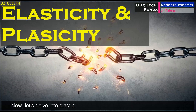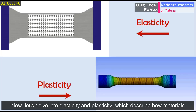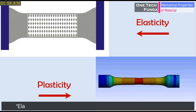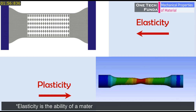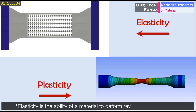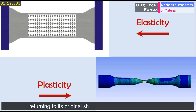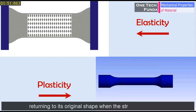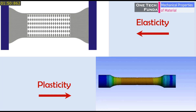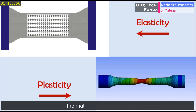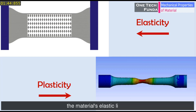Let's delve into elasticity and plasticity, which describe how materials deform under stress. Elasticity is the ability of a material to deform reversibly under stress, returning to its original shape when the stress is removed. Plasticity, on the other hand, involves permanent deformation beyond the material's elastic limit.